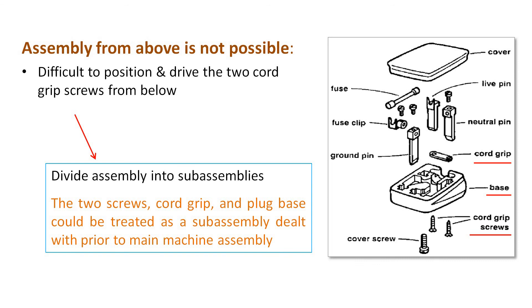A small solution is to divide this into sub-assemblies. Dividing into sub-assemblies means that the cord grip screws, base, and cord grip together form one sub-assembly. At the first workstation, only these three are assembled; at the next workstation, the remaining components are assembled. This particular assembly is then possible with the help of gravity.